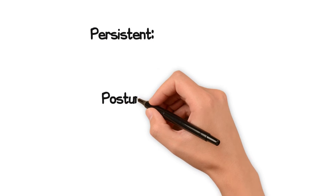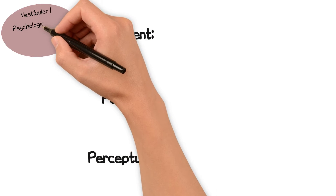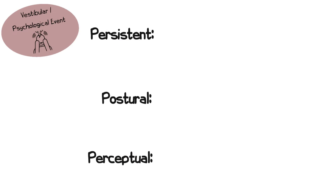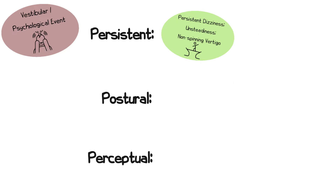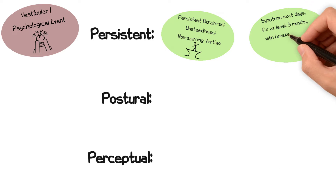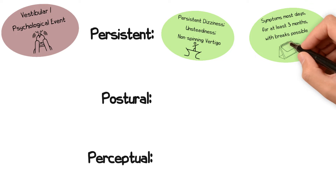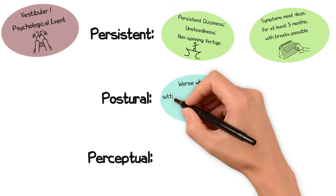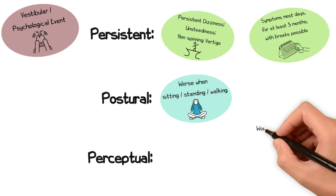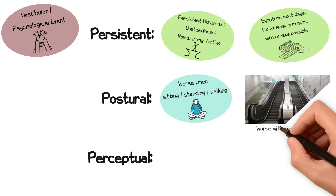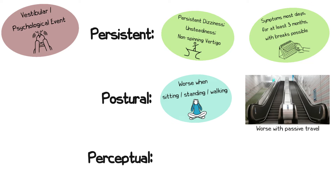Patients with 3PD typically present with the following features in their history: a triggering event such as an acute vestibular disorder or a period of significant stress or illness; persistent, non-spinning dizziness or unsteadiness lasting for a minimum of 3 months or more; symptoms present on most days, but can be interrupted by breaks lasting a few hours or even days; and symptoms worsened by an upright posture including sitting, standing, and walking, or with passive travel such as on an escalator, elevator, or in a vehicle.